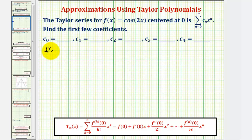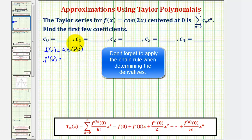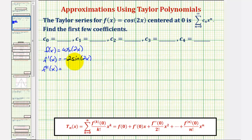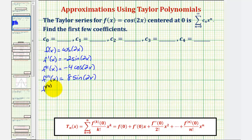Starting with f(x) = cos(2x), we find the first through fourth derivatives. The first derivative is −2sin(2x). The second derivative is −2 times the derivative of sin(2x), giving −4cos(2x). The third derivative is −4 times the derivative of cos(2x), giving 8sin(2x). The fourth derivative is 8 times the derivative of sin(2x), giving 16cos(2x).